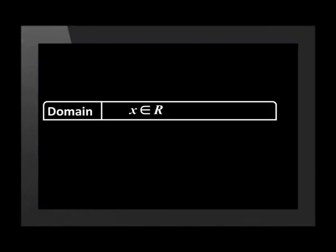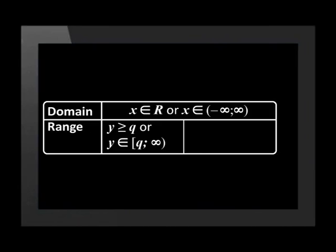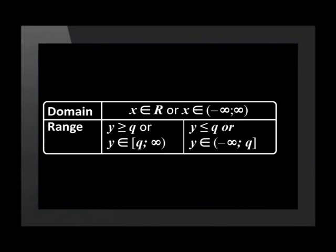We can write the domain of the parabola as x is an element of real numbers, or as x lies between negative and positive infinity using round brackets. We write the range of a concave up parabola as y is greater than or equal to q, or y lies between q and positive infinity using a square bracket to show q is included. For a concave down parabola, y is less than or equal to q, or y lies between negative infinity and the value of q.